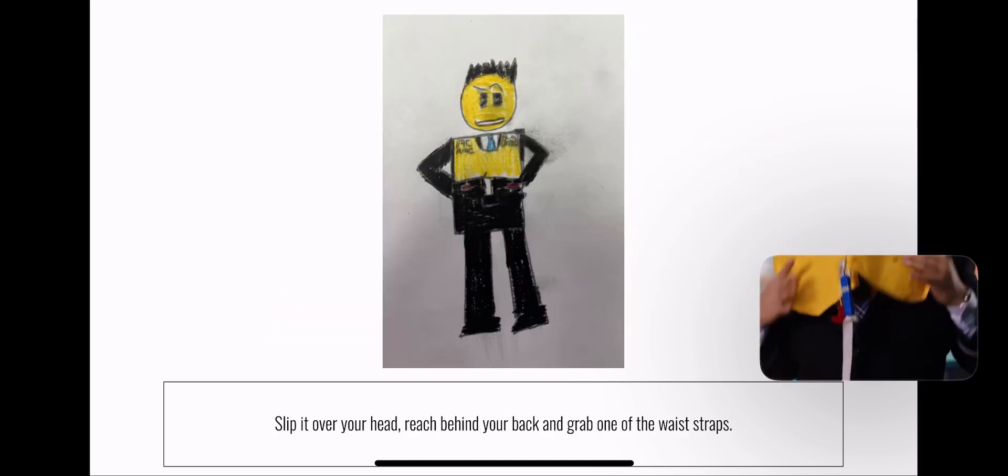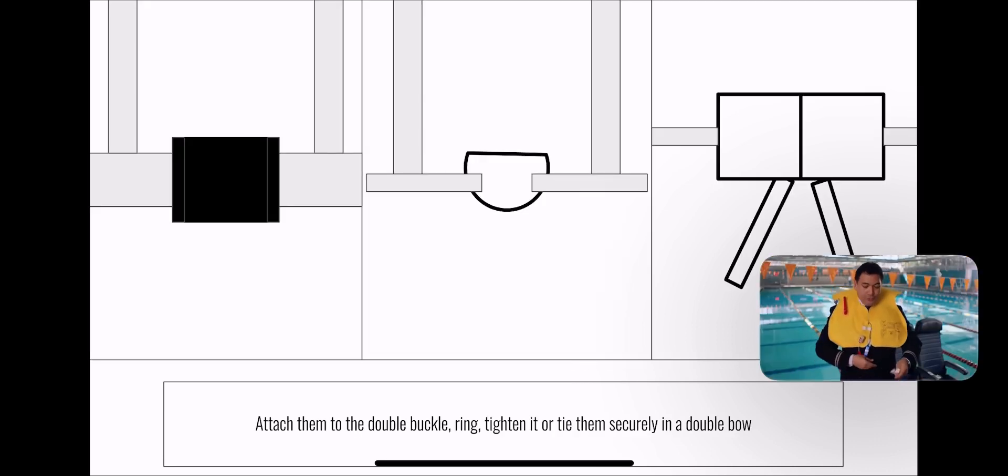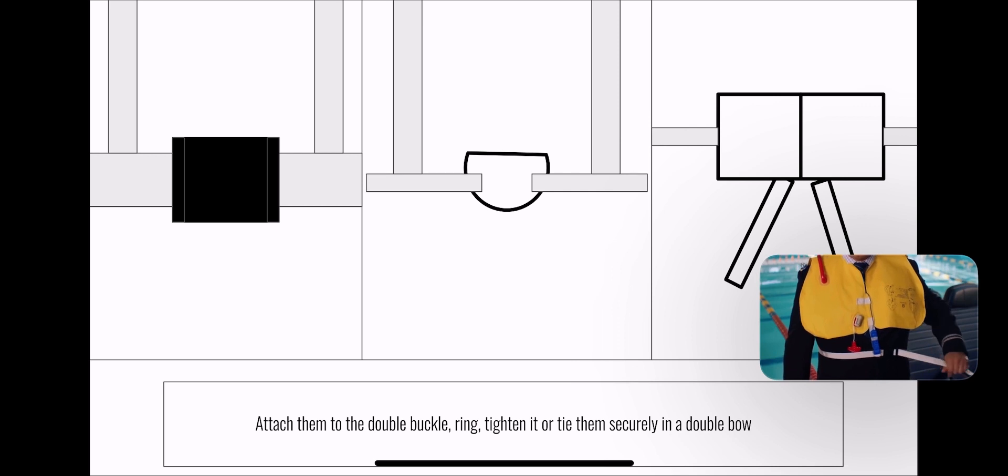Slip it over your head. Wrap the belt around your waist and secure it to the buckle in front. Pull the loose end to tighten.